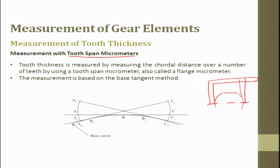The tooth thickness is measured by measuring the chordal distance over a number of teeth, using a tooth span micrometer also called a flank micrometer. Here we try to measure the chordal distance over a number of teeth — it is not a single tooth; we are essentially averaging across multiple teeth.